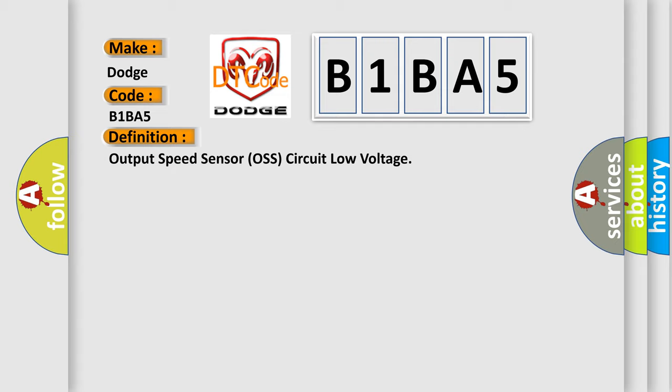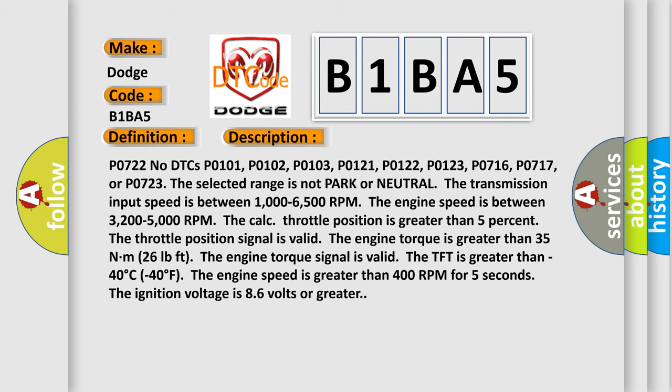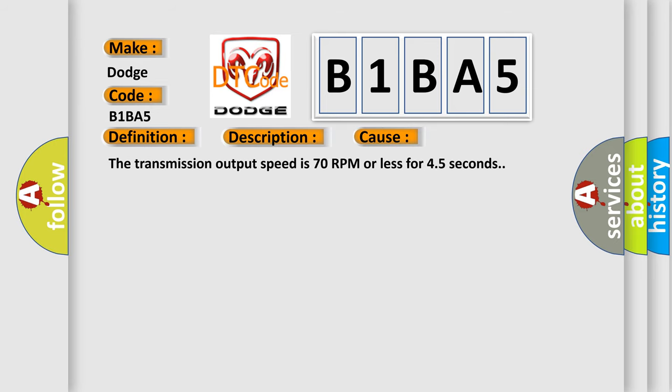The basic definition is: Output speed sensor open circuit low voltage. Here is a short description of this DTC code. P0722 No DTCs P01-01, P01-02, P01-03, P01-21, P01-22, P01-23, P07-16, P07-17, or P07-23. The selected range is not park or neutral. The transmission input speed is between 1,000 to 6,500 RPM. The engine speed is between 3,200 to 5,000 RPM. The calculated throttle position is greater than 5%. The throttle position signal is valid. The engine torque is greater than 35 Nm (26 pounds) and the engine torque signal is valid. The TFT is greater than minus 40 degrees Celsius (minus 40 degrees Fahrenheit). The engine speed is greater than 400 RPM for 5 seconds. The ignition voltage is 8.6 volts or greater. This diagnostic error occurs most often when the transmission output speed is 70 RPM or less for 45 seconds.